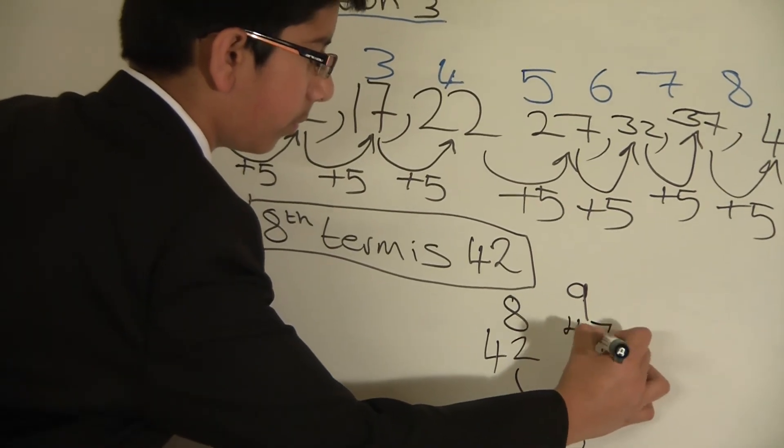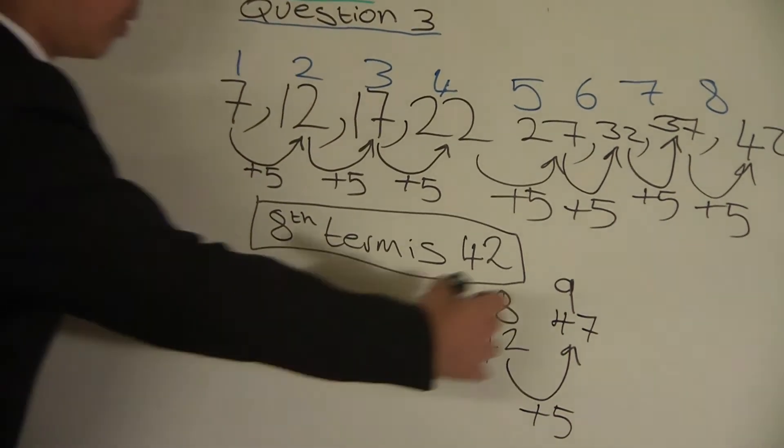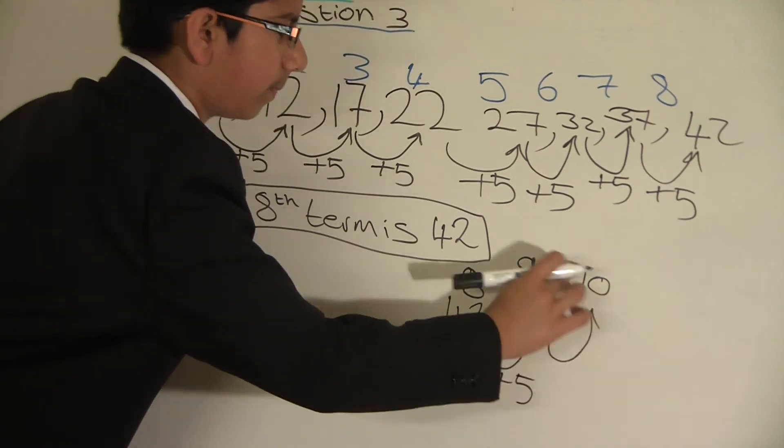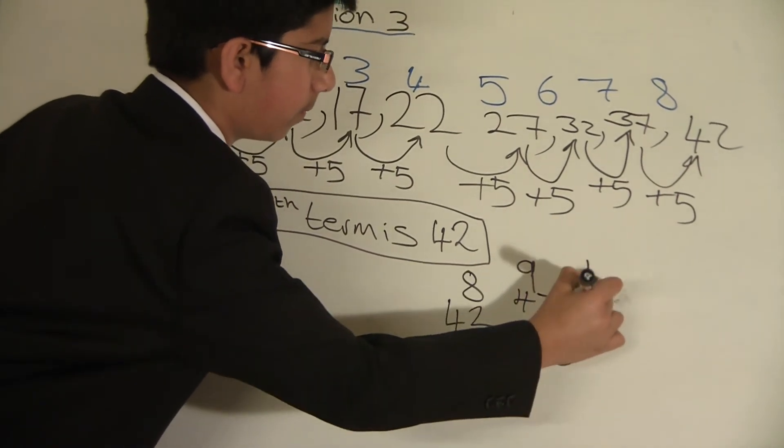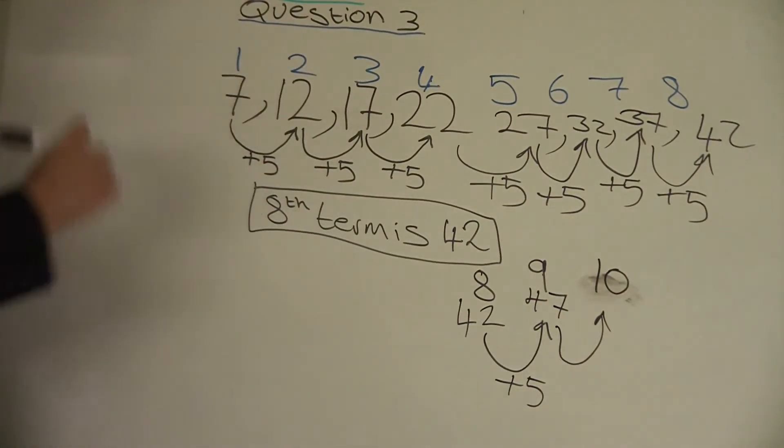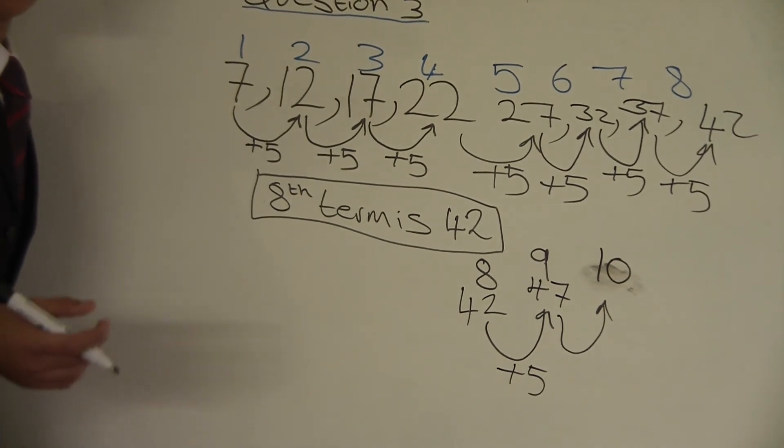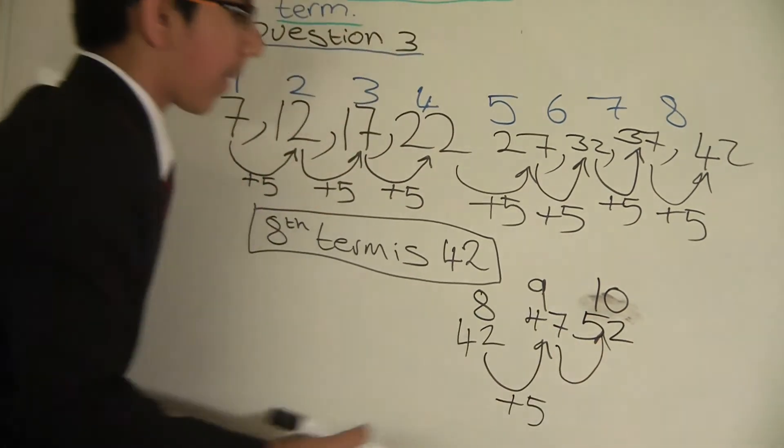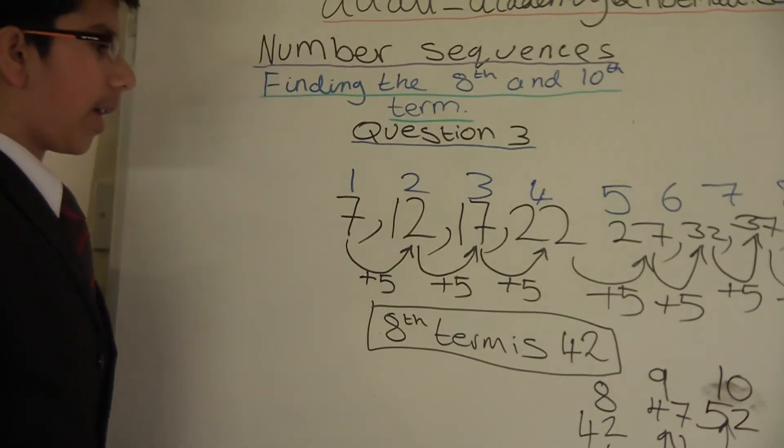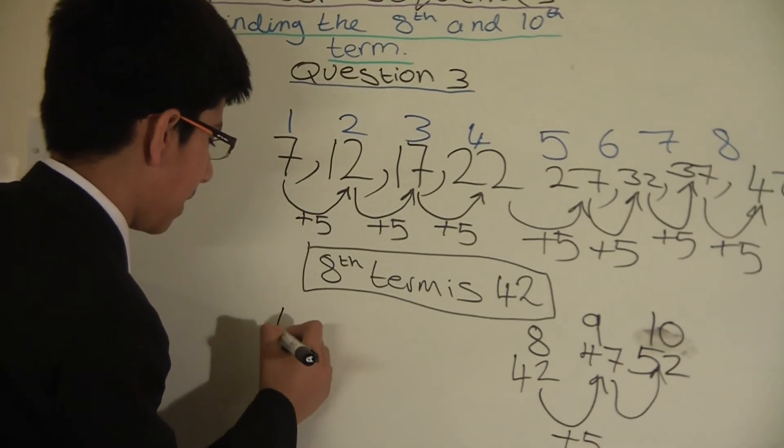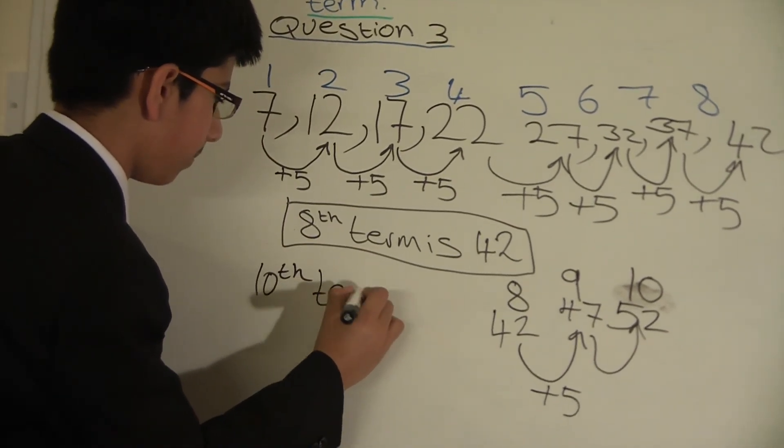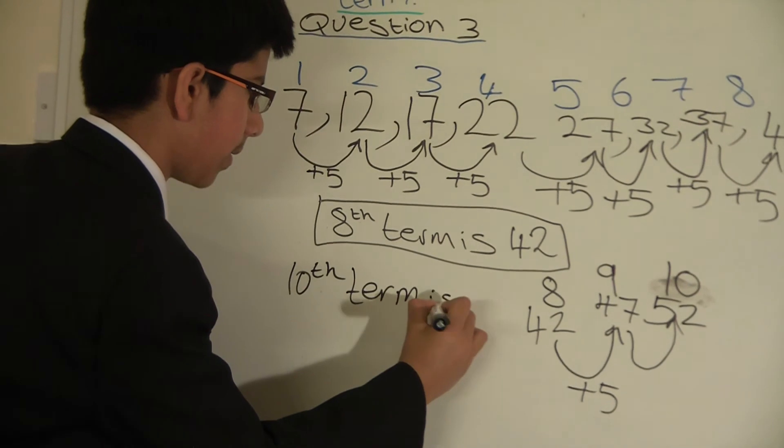So now once more, we will do that again to get our 10th term. So 47 plus 5 we get 52. So let's write 52 down. And that is our 10th term. The 10th term is 52.